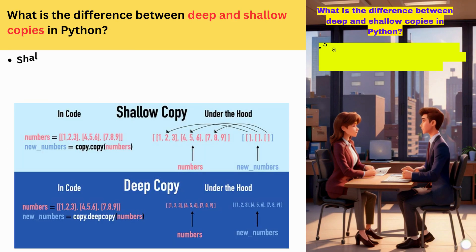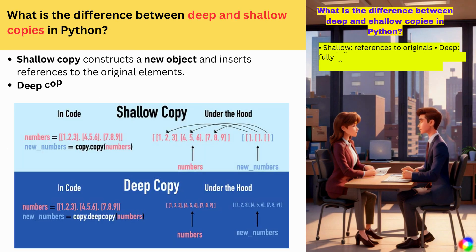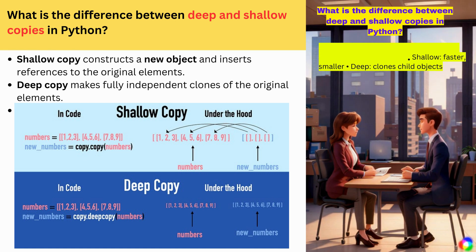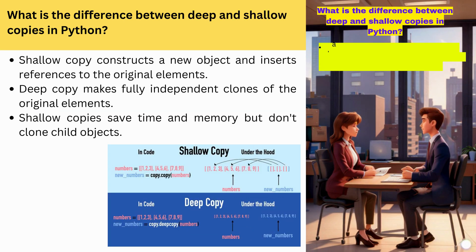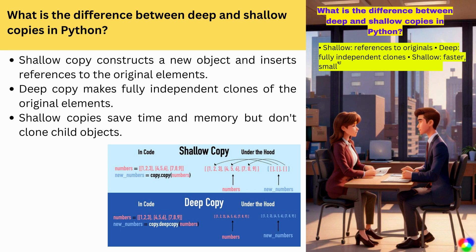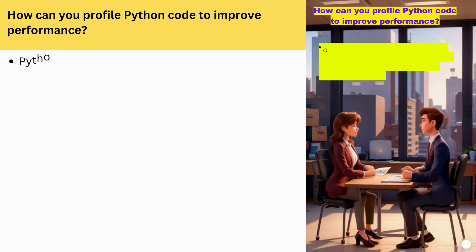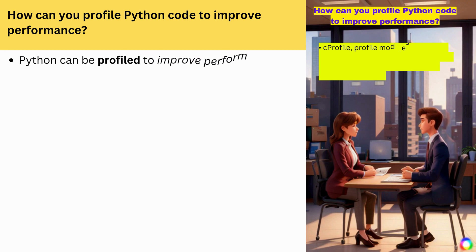What is the difference between deep and shallow copies in Python? Shallow copy constructs a new object and inserts references to the original elements. Deep copy makes fully independent clones of the original elements. Shallow copies save time and memory but don't clone child objects.